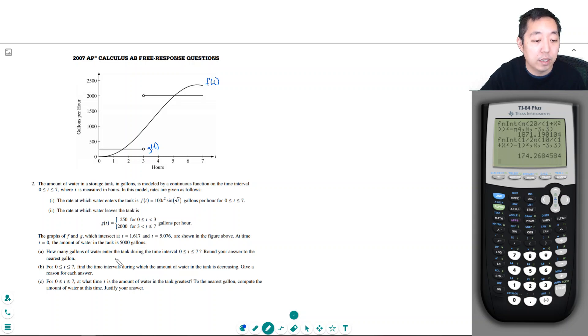How many gallons of water enter the tank during the time from 0 to 7? So we're just integrating over f of t, because that's how much water is entering. How many gallons of water enter the tank? It would be the integral from 0 to 7 of f of t dt. And f of t is given by this.